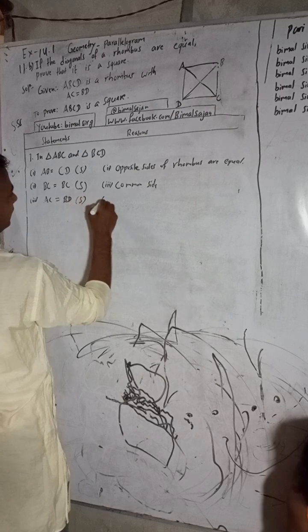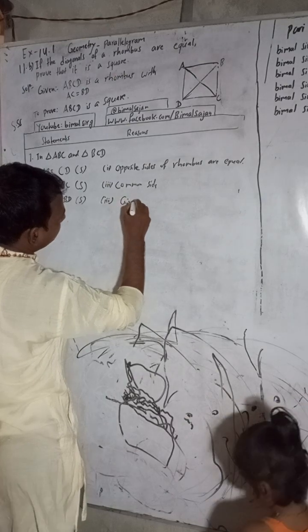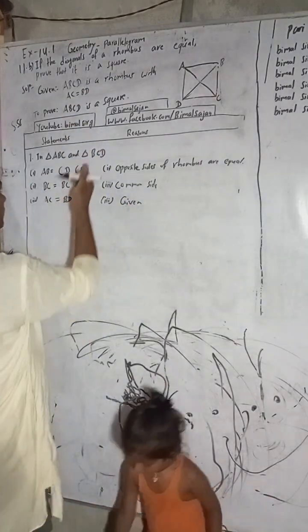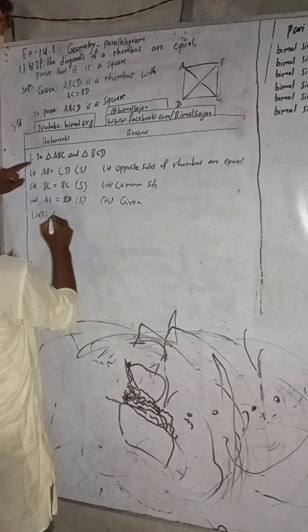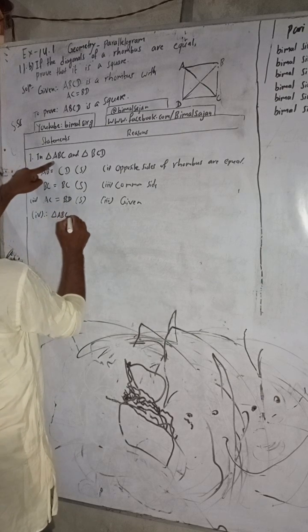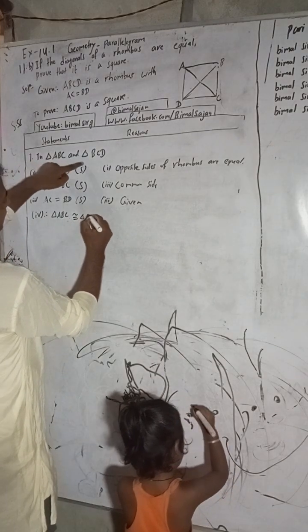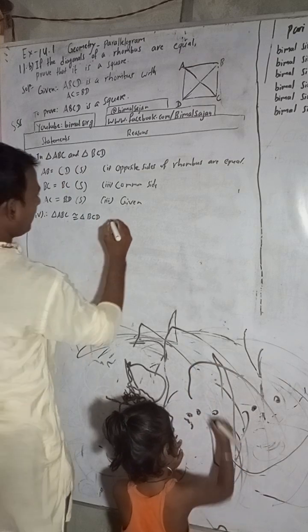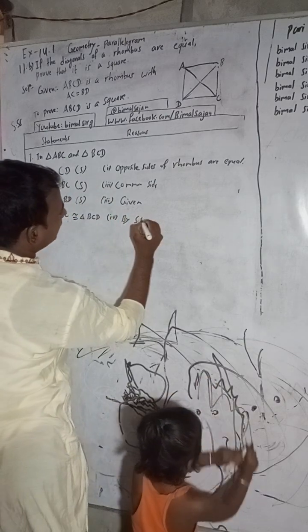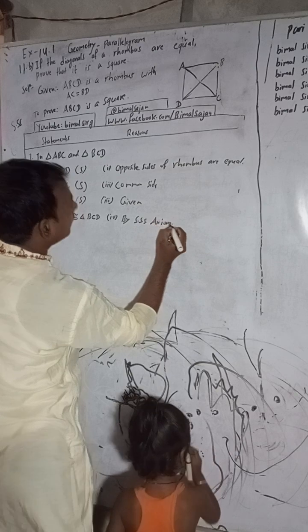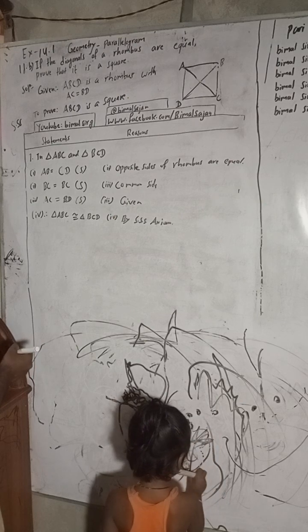The reason is given: the sides of a rhombus are equal. So now we have got Side-Side-Side — all equal. Therefore, triangle ABC is congruent to triangle BCD by Side-Side-Side. Now we have congruent triangles. Next, to prove that ABCD is a square.